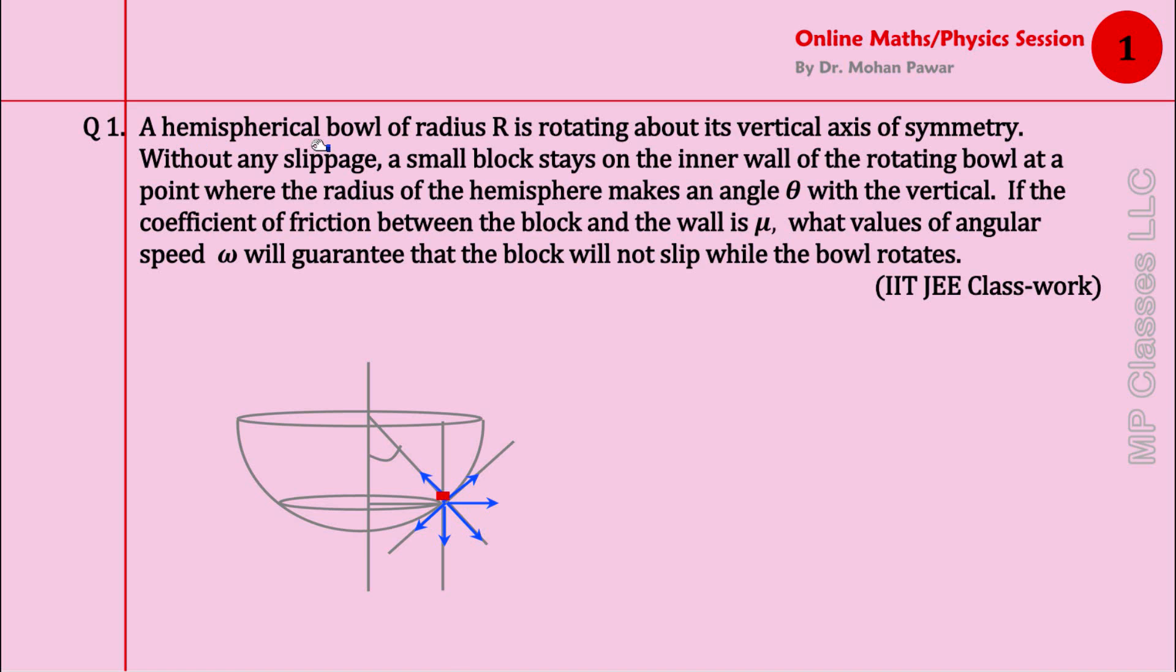A hemispherical bowl of radius R is rotating about its vertical axis of symmetry without any slippage. A small block stays on the inner wall of the rotating bowl at a point where the radius of the hemisphere makes an angle theta with the vertical.